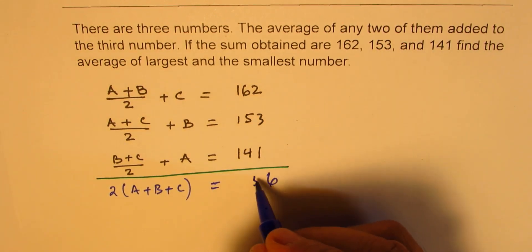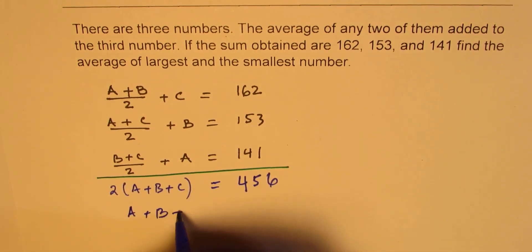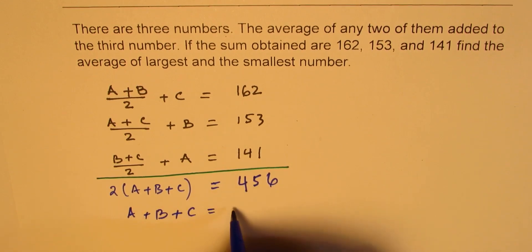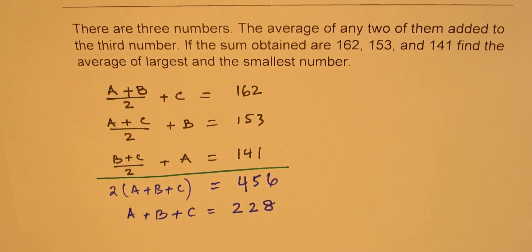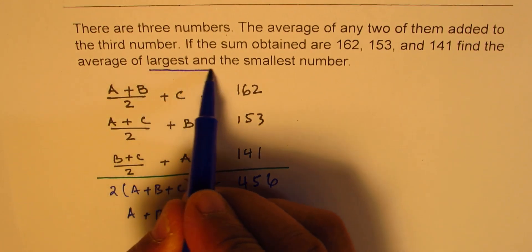So what we get here is that A+B+C is equal to half of this, which is 2 and 2 times 2 and 8 - 228. So now we again have the same situation - what we need to figure out is the average of the largest and the smallest number, so basically we are interested in finding this number.